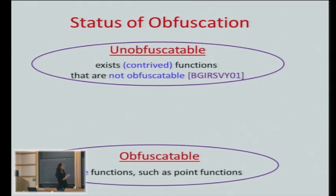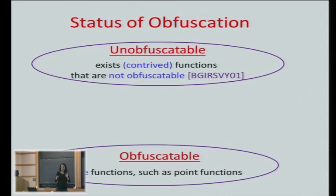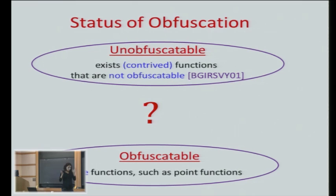What about positive results? We also have positive results, but they are in a very sad state of affairs until recently. We know there are very simple functions that can be obfuscated — like a point function, which on one point outputs one and everything else zero, or generalizations of that. But not much better than point functions — these are very, very small classes of functions. The question was: what about functions that we actually care about? There's this really small class, and there's the contrived negative example, but for all the functions we actually care about, we didn't know what the answer is — and we still don't.